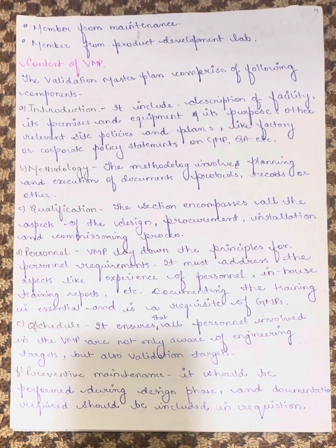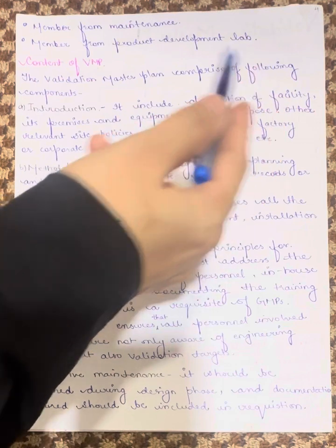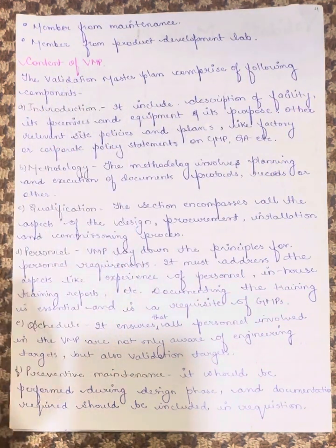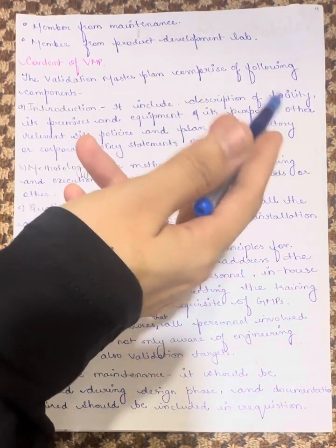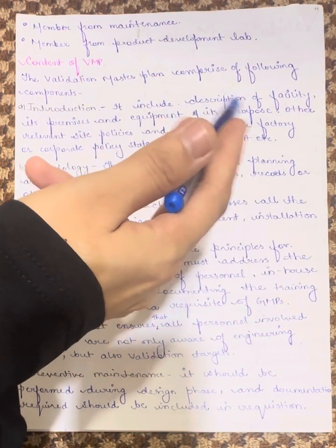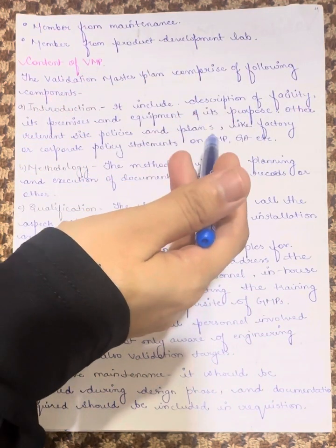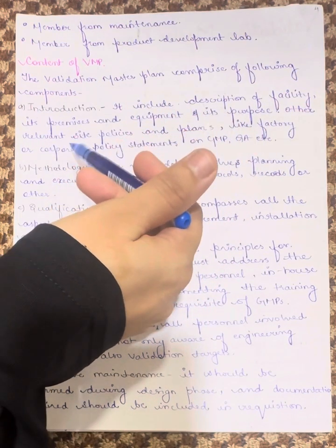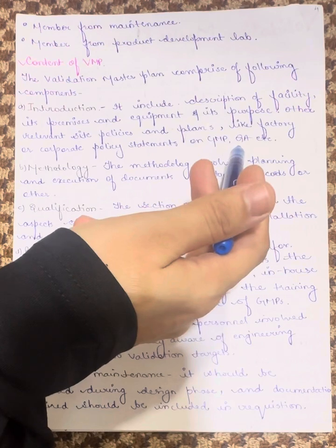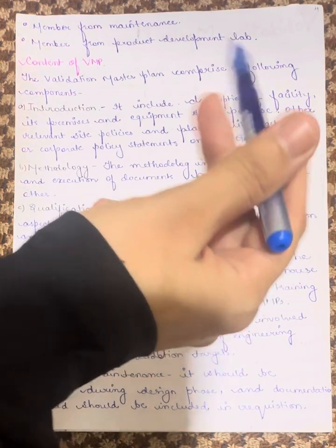Now let's see the content of the Validation Master Plan — what headings are included. The Validation Master Plan comprises the following components. First is the introduction, which includes description of the facility, its premises, equipment and purpose, and other relevant site policies and plans like factory or corporate policy statements on good manufacturing practices, quality assurance, etc.